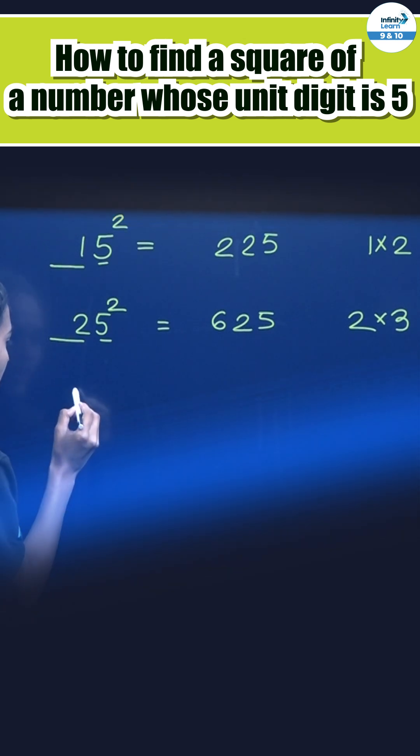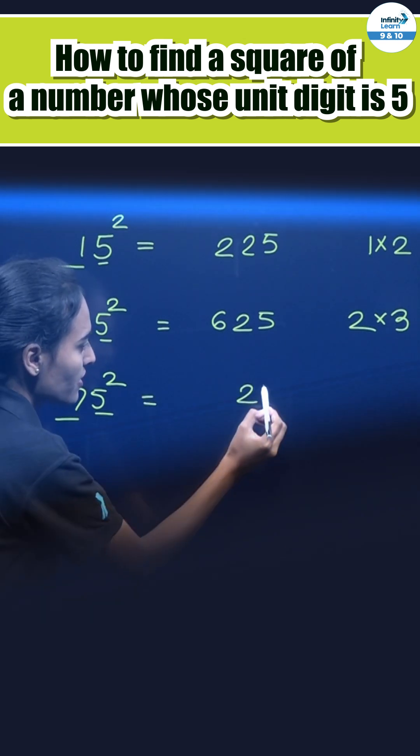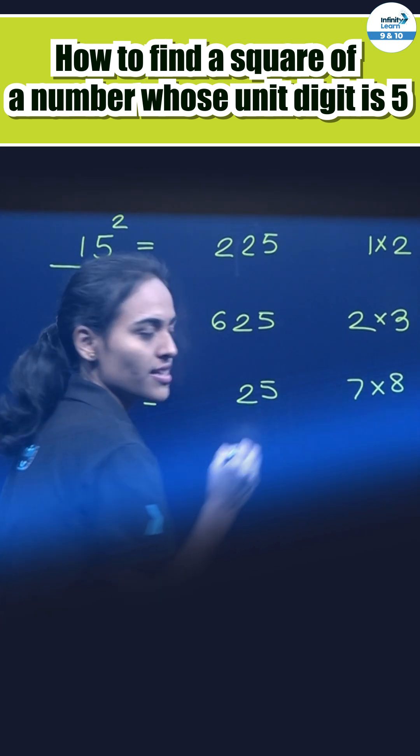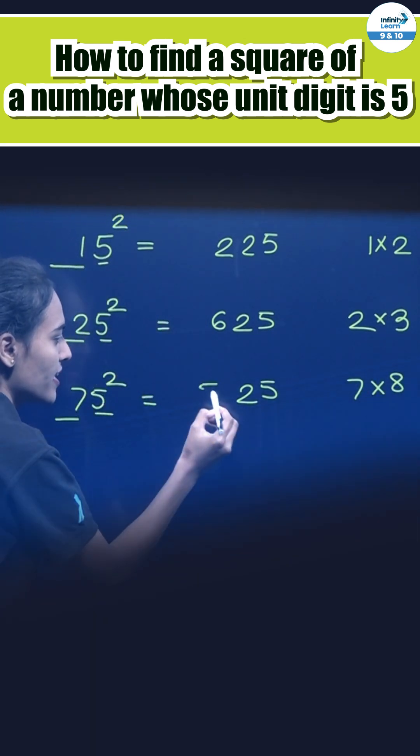Similarly student, please find 75 square. Again group it, 5 as one group, remaining number as one group. First write 5 square, that is 25. Remaining number 7, 7 into 7 plus 1, 8. It is how much, 56, right here.